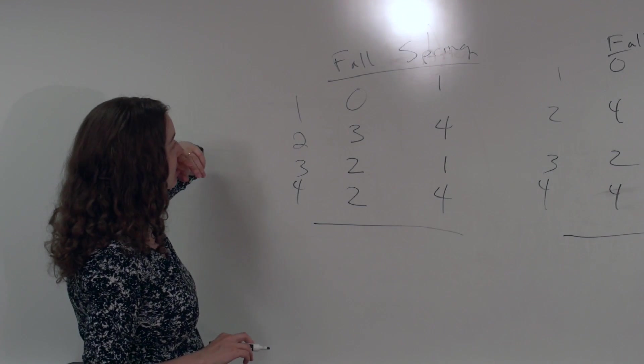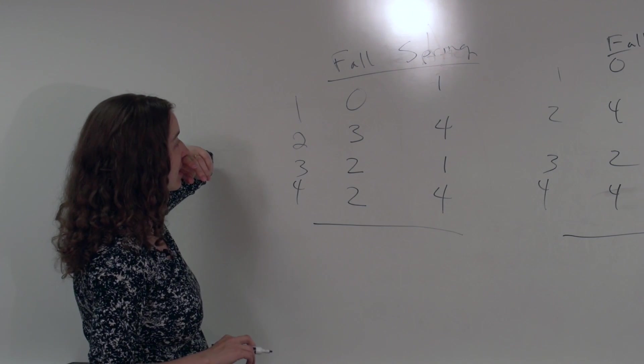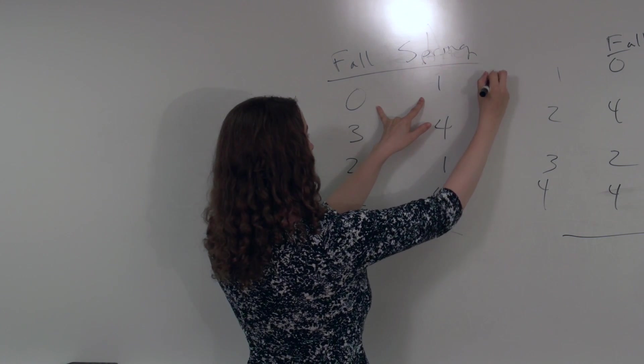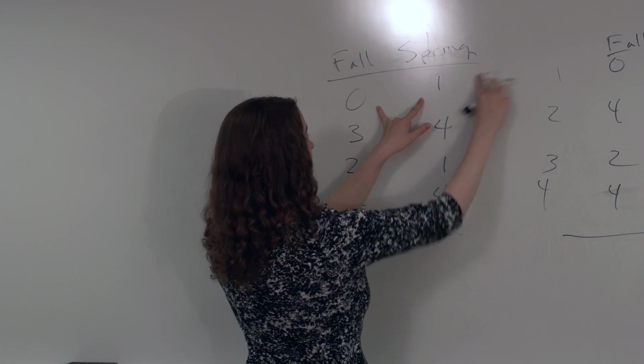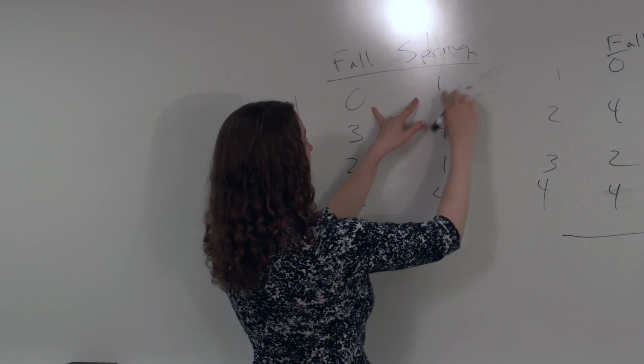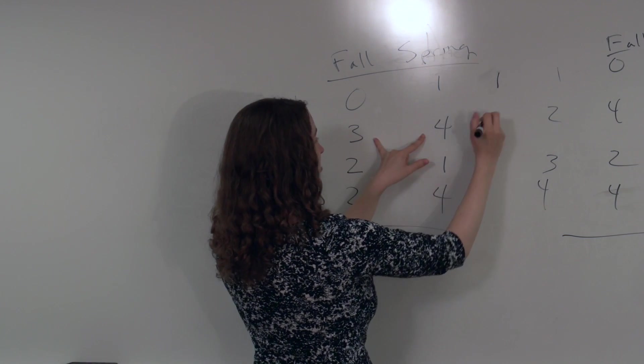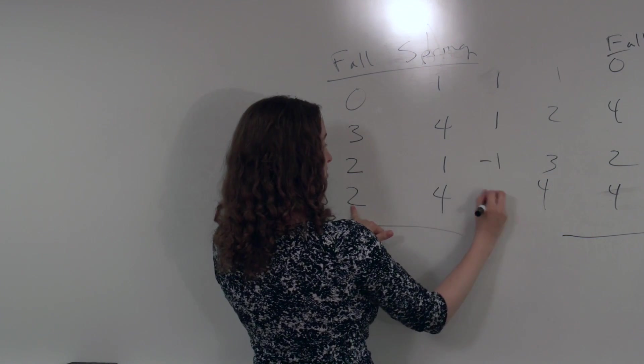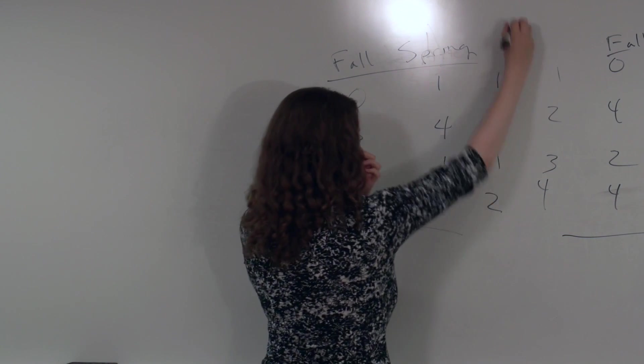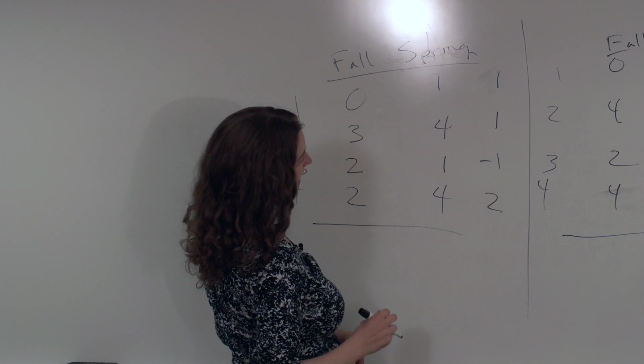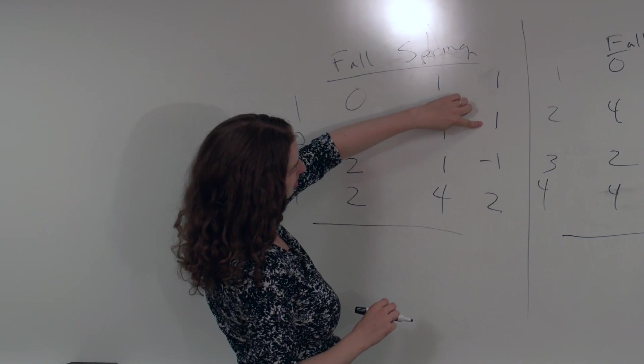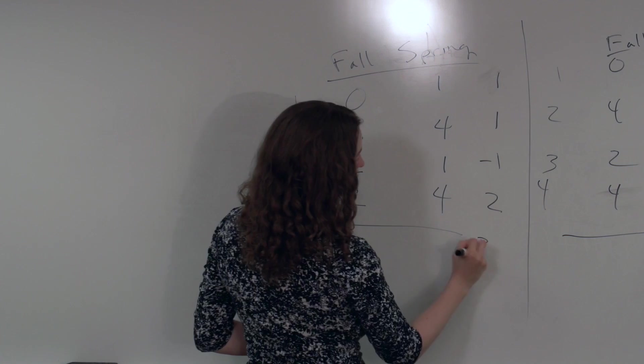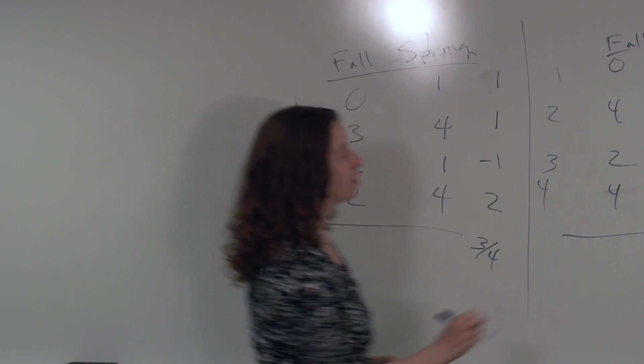What I'm going to do is compare the value of a particular test statistic that I actually observe here to the values of the test statistic that I would observe under other data sets that are possible under the null hypothesis. So what I might do is take the difference between fall and spring for each student that I actually observe. Let's do the difference between spring minus fall. So I've got 1 minus 0 is 1, and 4 minus 3 is 1, and 1 minus 2 is negative 1, and 4 minus 2 is 2.